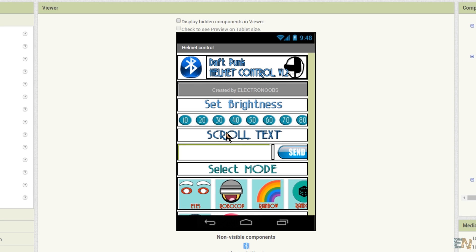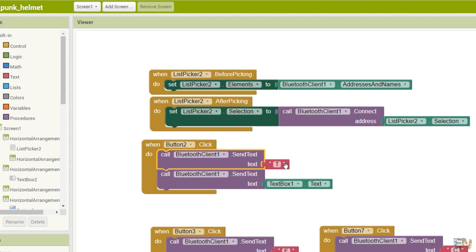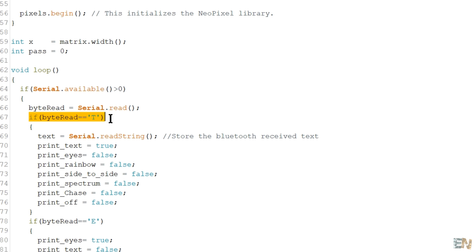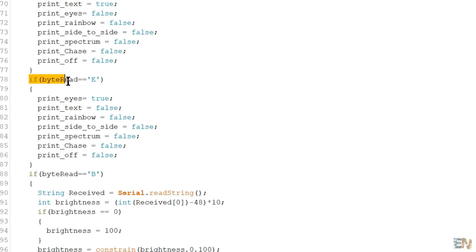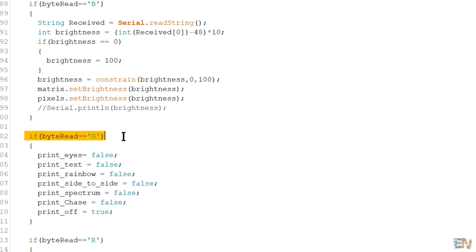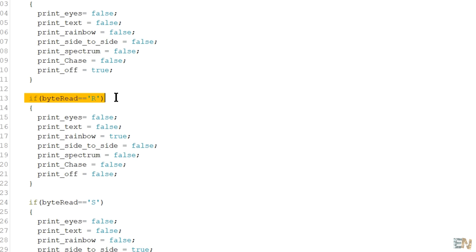When I send the new text, I send the T character, then I send the text to be displayed. So in the code, when I detect the received byte equal to T, then I save the entire text that will be scrolled onto the display. I do the same for all the buttons but using different characters. So read all the comments in the code for more.